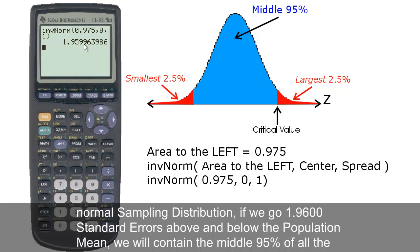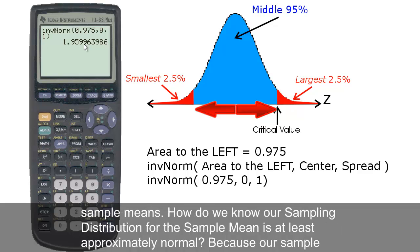This tells us that for any normal sampling distribution, if we go 1.9600 standard errors above and below the population mean, we will contain the middle 95% of all the sample means.